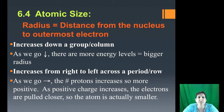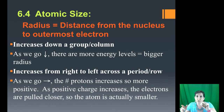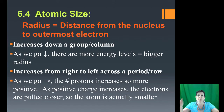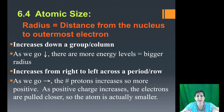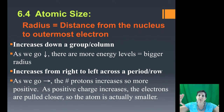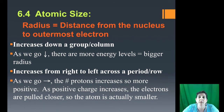Now we'll talk about a trend — atomic size. Atomic size measures how large the atom is, and it relates to the radius: the distance from the nucleus out to the atom's outer electron. As we go down a group or column, we are getting bigger, because we're jumping from one energy level to the next — second, third, fourth — getting bigger and bigger. More energy levels means a bigger radius and a bigger atom.